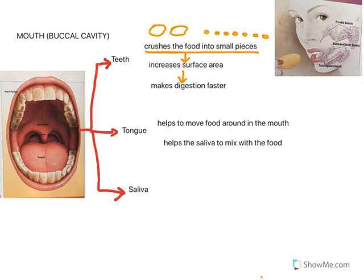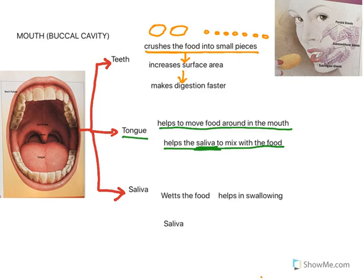Next is the tongue. The muscular tongue helps the food to move around in the mouth. As we bite the food, it keeps moving around the mouth, and in doing so, the tongue helps the saliva to mix with the food.